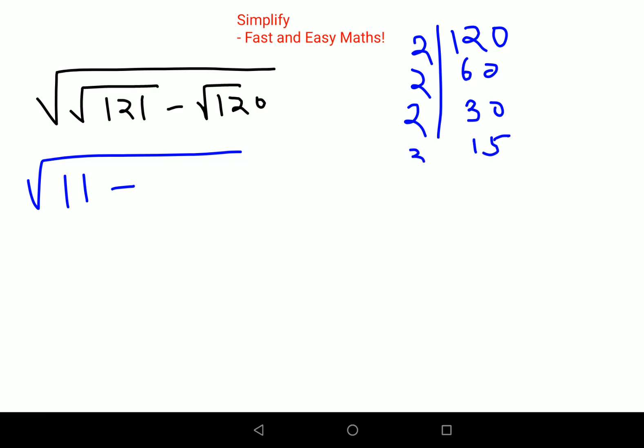Then you are left with 3, 5, and 5. So I can write this as 2×2, which is 4×2×3×5, which equals 30. This can be written as minus √(4×30).